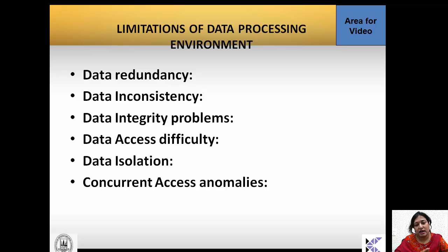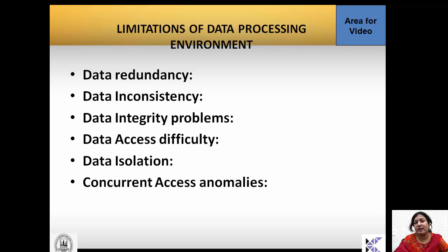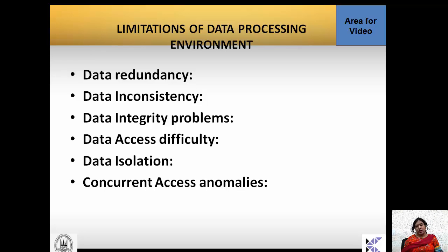One problem is data redundancy. Data redundancy means duplication of data — the same data is stored in various forms in the system. The problem of data redundancy leads to data inconsistency: when the same thing is stored twice or thrice and you change the first instance, the second instance may not be changed, so you have to ensure all instances are updated simultaneously.